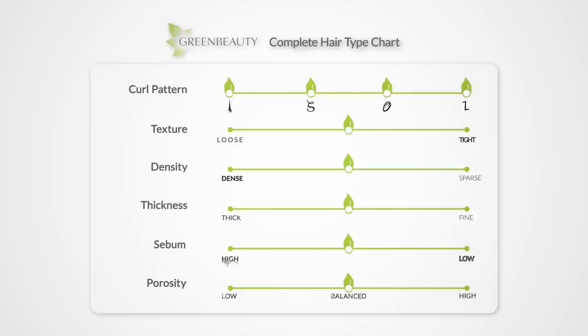So I created a complete hair type chart. There's six things you need to know about your hair in order to truly understand it. After that, you'll know when your hair is happy or sad, you'll immediately know if and why something is not working, and you'll easily be able to build a really good hair regimen that works. If you watch green beauty videos, you've seen this chart a lot because it's important. So in the next few videos, I'm going to break down how to test, enhance, and change each line.